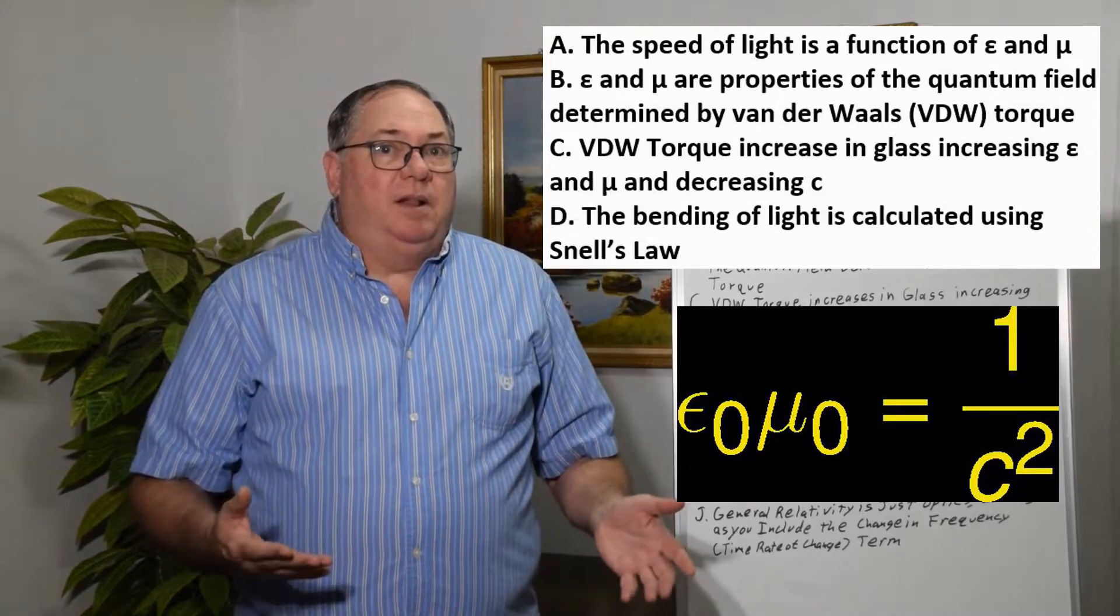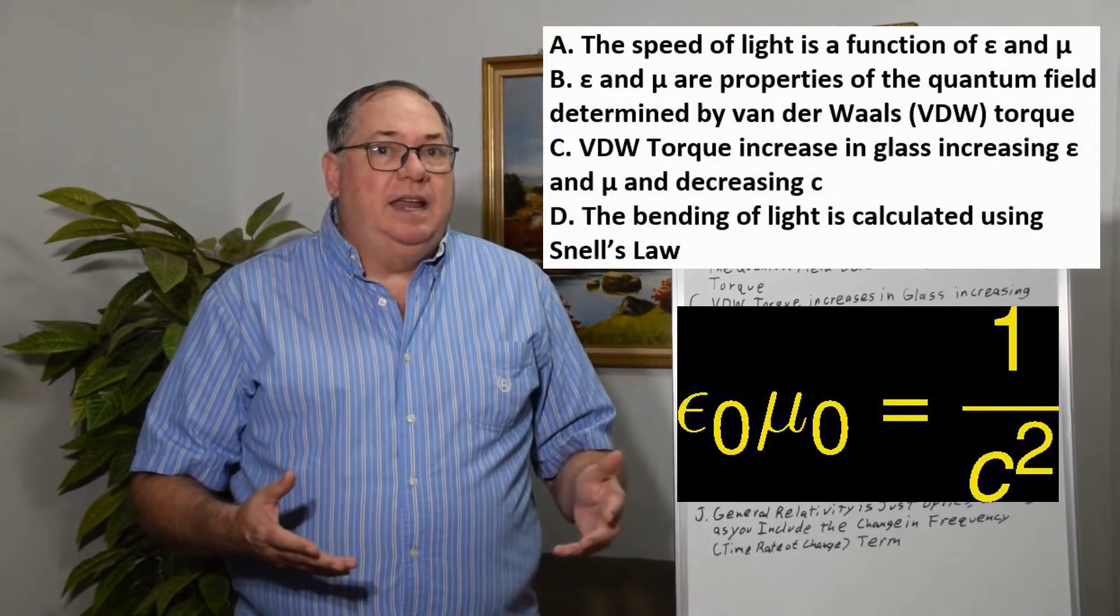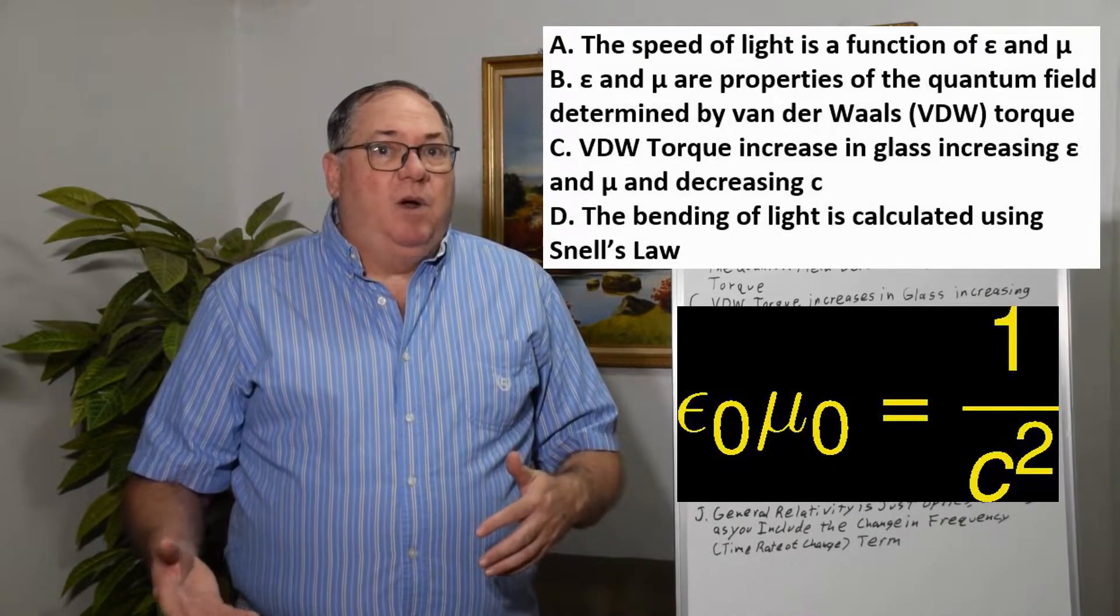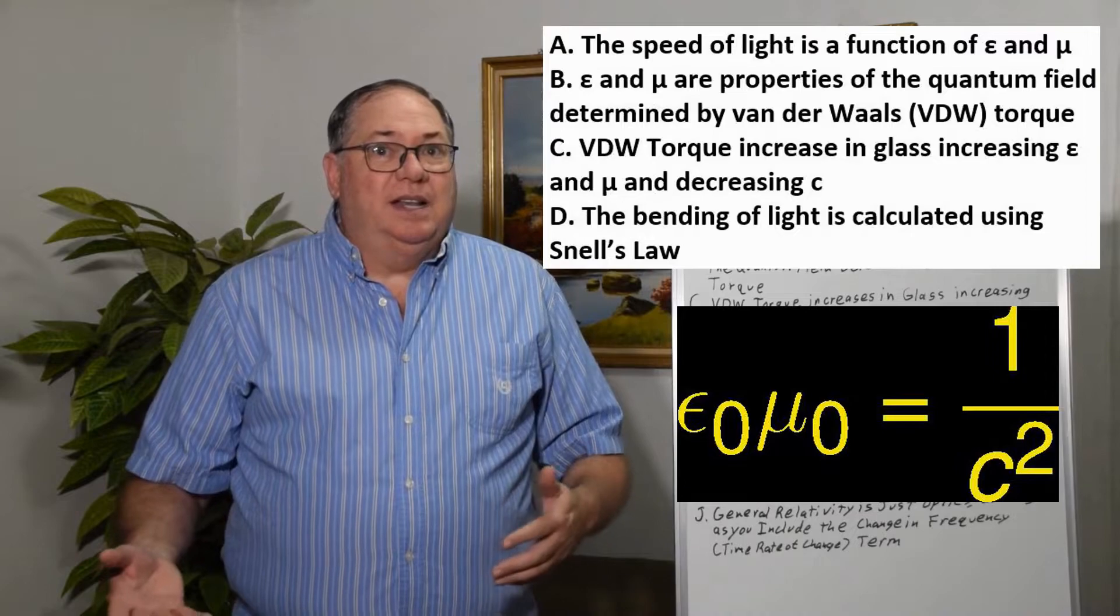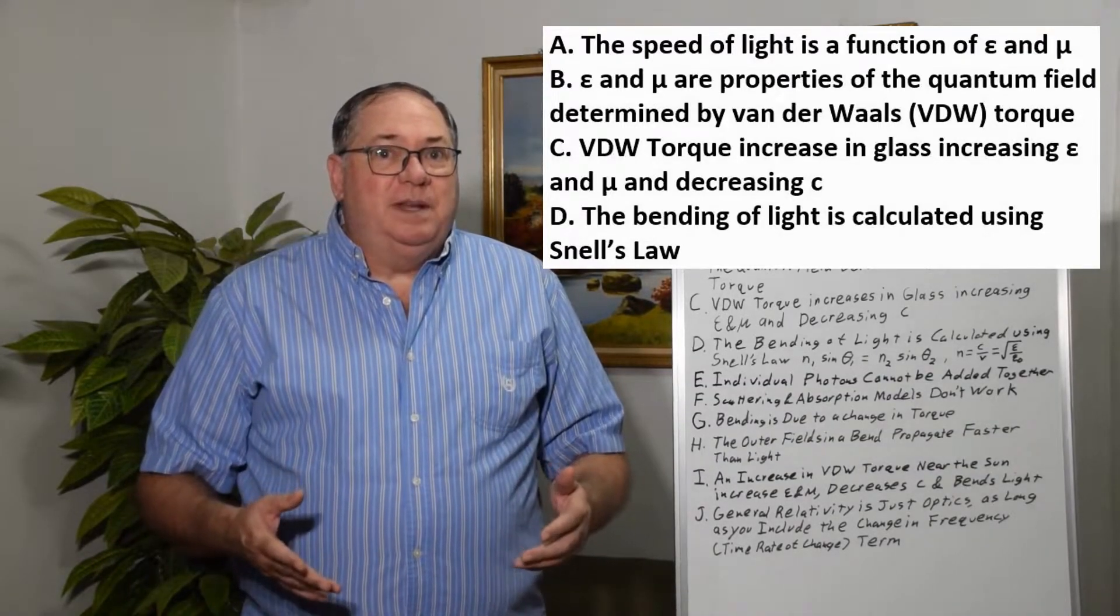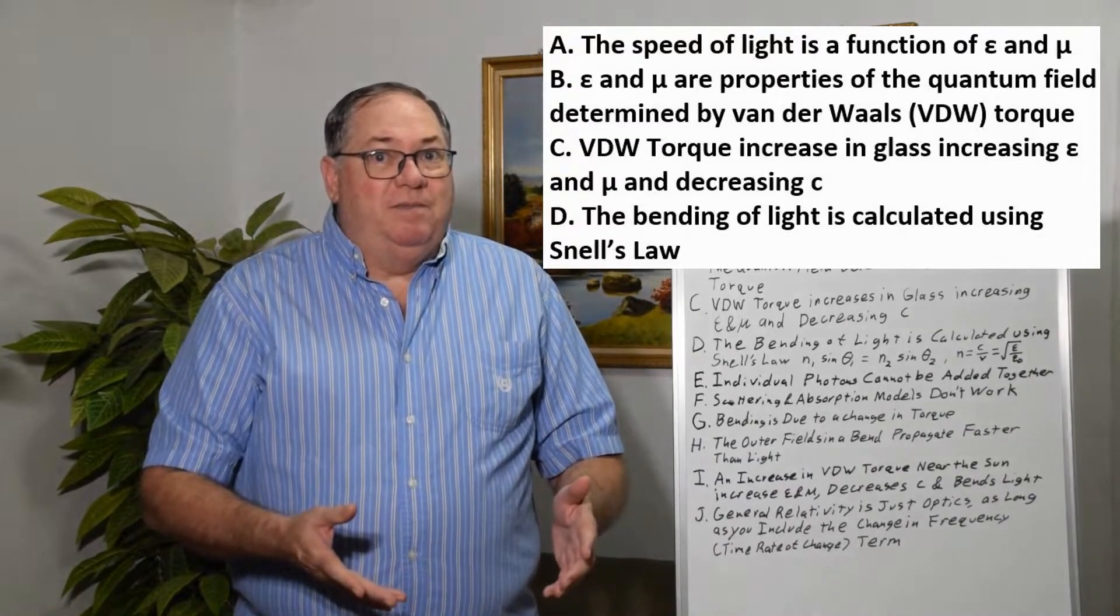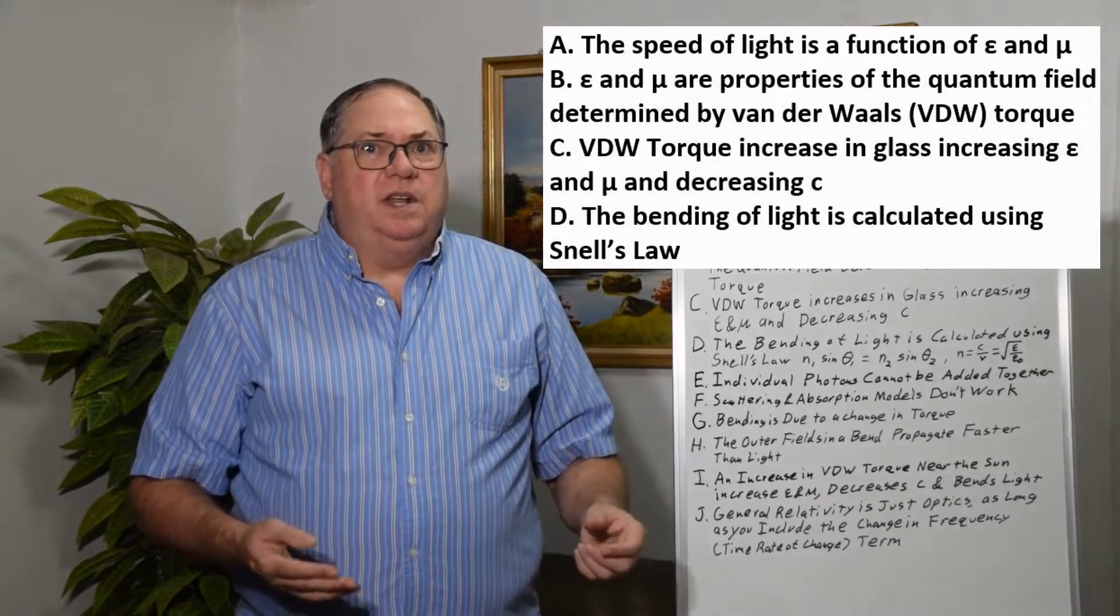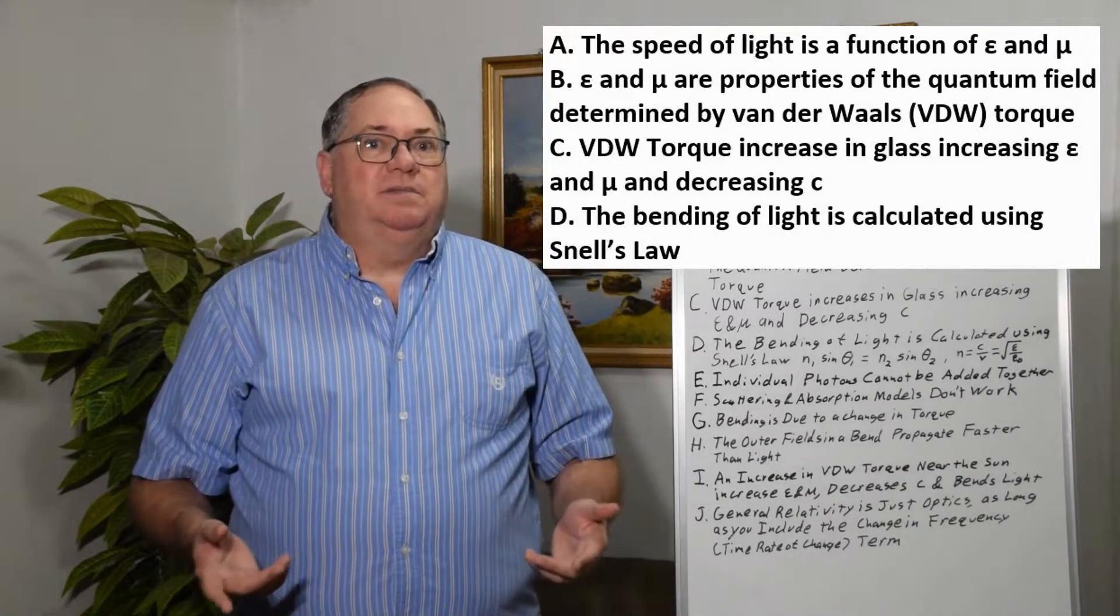Another problem is he treats the speed of light like it's a constant even when it's in water and glass, even though we know that it slows in water and glass. If you measure something slower, you should believe your measurement. You shouldn't say it's not really slower. That's a nonsensical approach to physics.